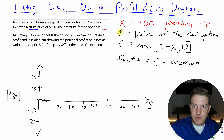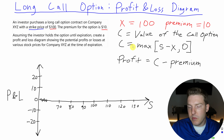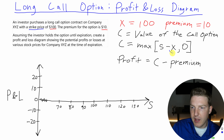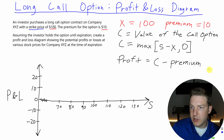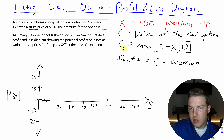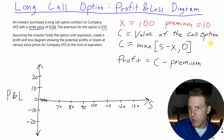There's a variable C — the value of the call option. C equals the maximum of either the stock's price S minus X, the exercise price of $100, or zero. So this value of C can never be less than zero. The profit is equal to the value of that call option C minus the original premium that we paid of $10.